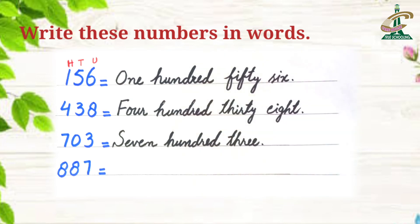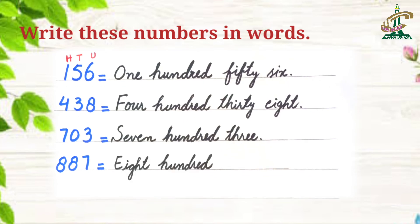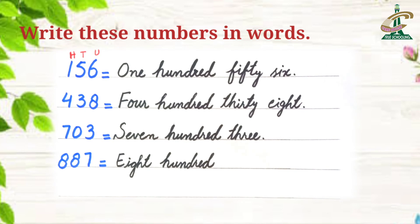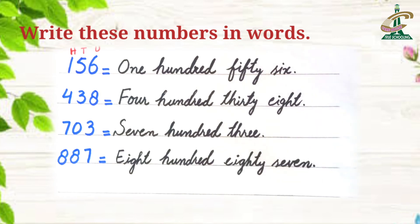This is the fourth value. In this value, the place of 8 is 100. How we can write? 800. And now, we will read units and tens together. How we can write? 87. We will write this as 87. This is 887.